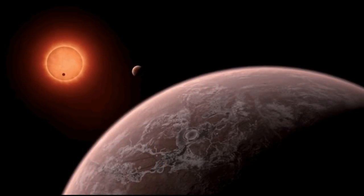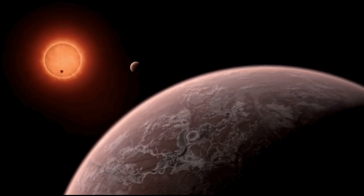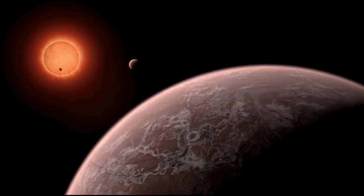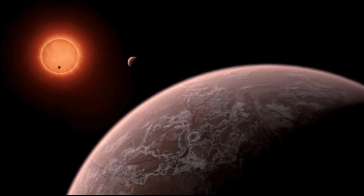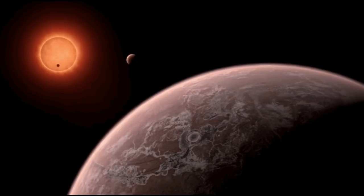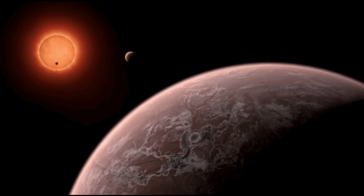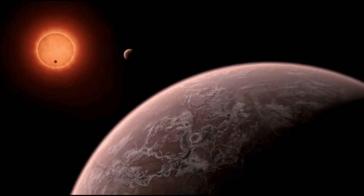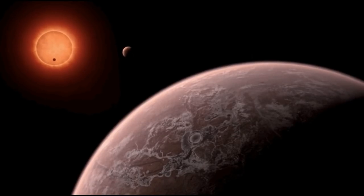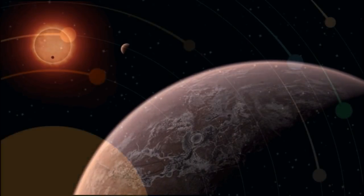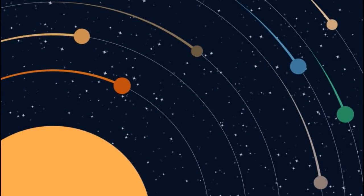TRAPPIST-1 is an ultra-cool red dwarf star that is slightly larger but much more massive than the planet Jupiter. It is only 39.6 light years away from our Sun in the constellation Aquarius. Three planets orbiting this small wonder are in the habitable zone.